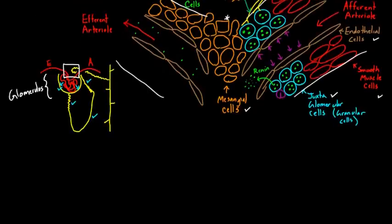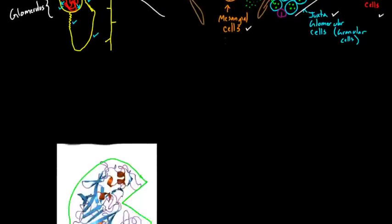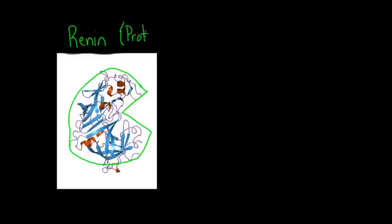Here's a picture of the renin molecule - a three-dimensional figure of this protein. When I talk about renin coming out of the juxtaglomerular cells, this gives you a sense of what it actually looks like. Keep in mind this is a protein hormone, meaning it's a protein that allows one cell to talk to other cells at a distance. We'll discuss more about how renin works in the next video.